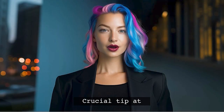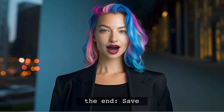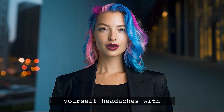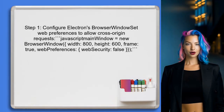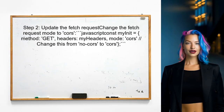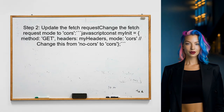Stick around — I have a crucial tip at the end that could save you a lot of headaches when working with Electron and CORS. To address the CORS issue, first ensure that the Electron app is configured correctly. This involves setting the web preferences in the browser window to allow cross-origin requests. Next, modify the Fetch request to handle CORS properly — instead of using no-CORS mode, use CORS mode to allow the request to be processed correctly.